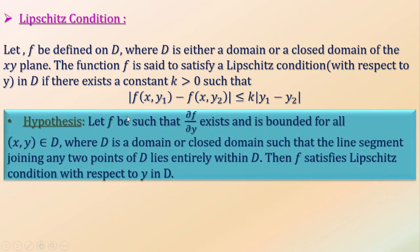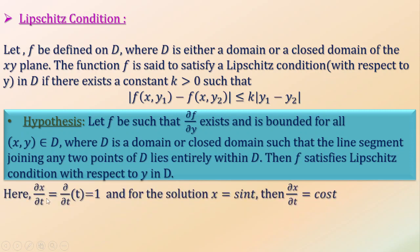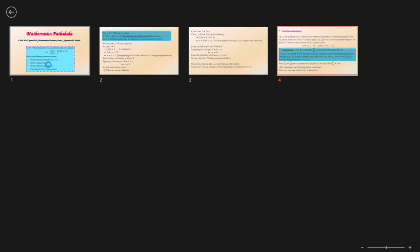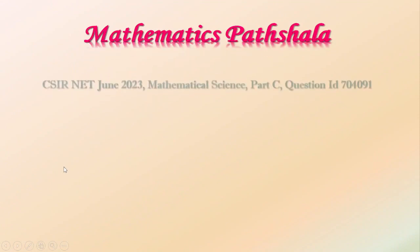Let's see another hypothesis from this condition. Let f be such that ∂f/∂y exists and is bounded for all (x,y) belongs to D, where D is a domain or closed domain such that the line segment joining any two points of D lies entirely within D. Then f satisfies Lipschitz condition with respect to y in D. Here option 4 is saying that the solution of P is Lipschitz.